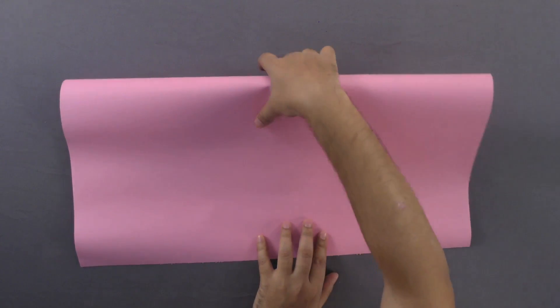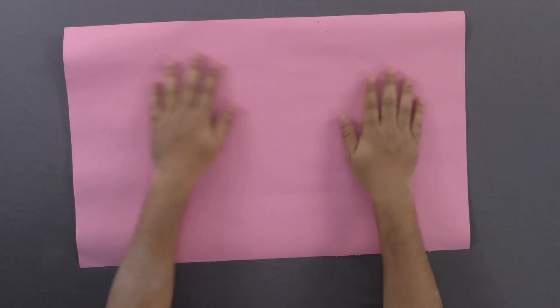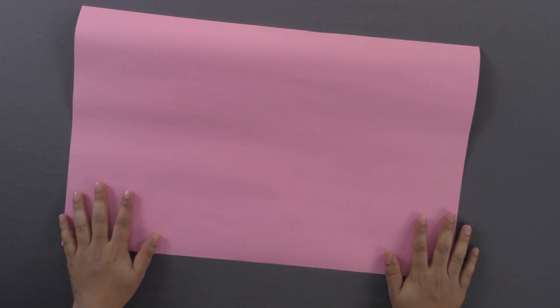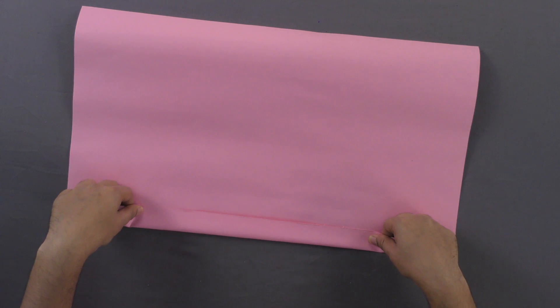Take a chart paper and fold a half sheet of it from inside to make two creases. Now spread the paper and make a fold inwards at the bottom.